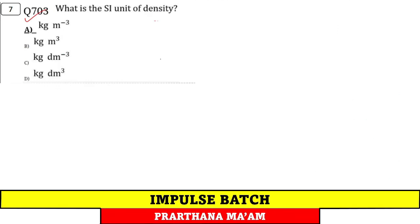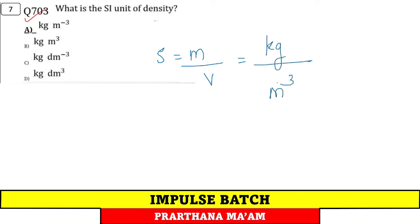Question 7: What is the SI unit of density? Density = mass/volume. Mass SI unit is kg, volume SI unit is m³. So SI unit of density is kg/m³. Option A.